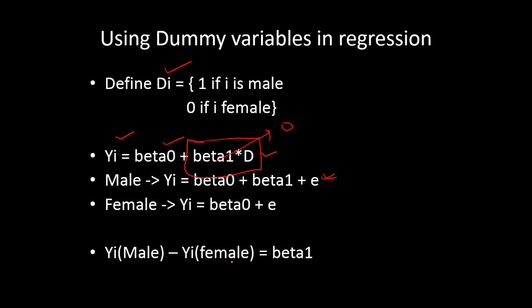If you take the difference of the dependent variable for male and female, you will see that the difference is nothing but β₁. For example, if salary is our dependent variable, then salary of male minus salary of female equals the slope coefficient of the dummy variable. That's how we interpret the estimate of a dummy variable.